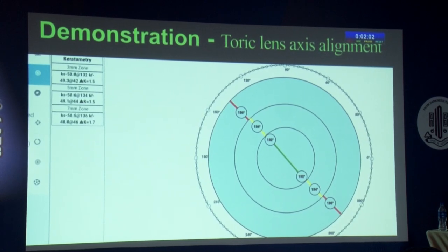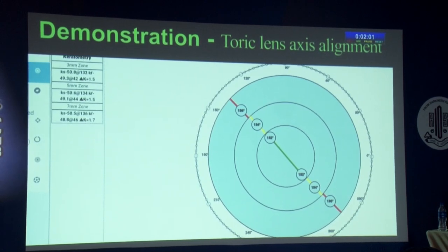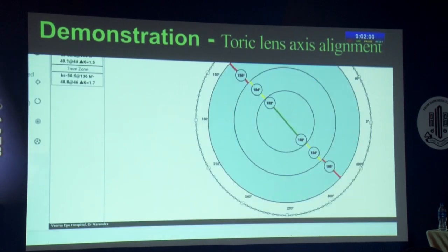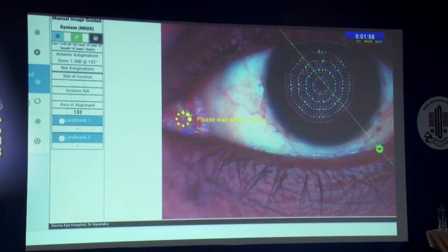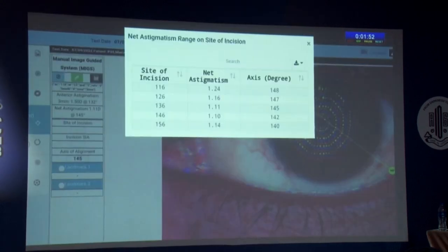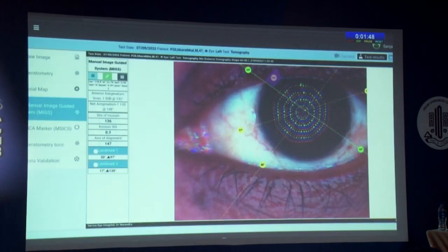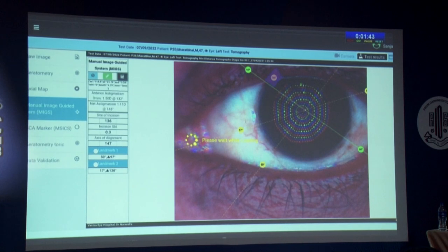Left eye keratometry of this patient shows 1.5 diopter astigmatism in 132 degrees in the 3 mm zone. Press the calculator icon — net astigmatism will be displayed directly from the Barrett toric calculator. It is 1.1 diopter in 145 degrees in this case. Enter SIA value, which is 0.3 in this case; the axis of alignment will be displayed automatically, which is at 147 degrees.